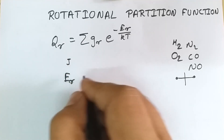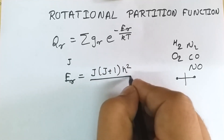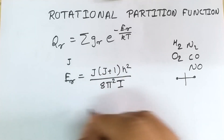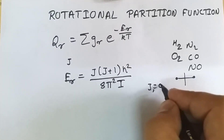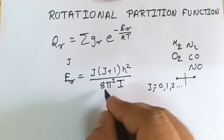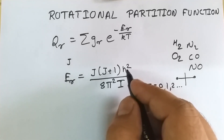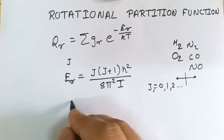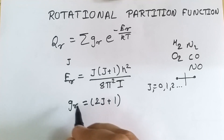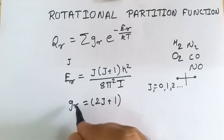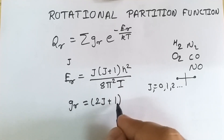The rotational energy for a diatomic molecule in the jth state is given by: Er = j(j+1) × h² / (8π²I), where j is the rotational quantum number with values 0, 1, 2, ... up to infinity; I is the moment of inertia; and h is Planck's constant. The degeneracy factor gr for the jth level is given by 2j+1. So if j=1, the total degeneracy is 3.